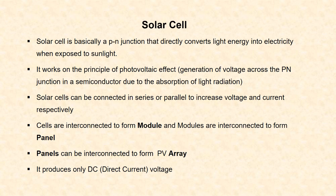These solar cells can be connected either in series or parallel to increase the voltage and current. When we connect the solar cells in series, the current through the circuit will be same, so voltage gets added up. When we connect the solar cells in parallel, voltage remains same, so current gets added up.